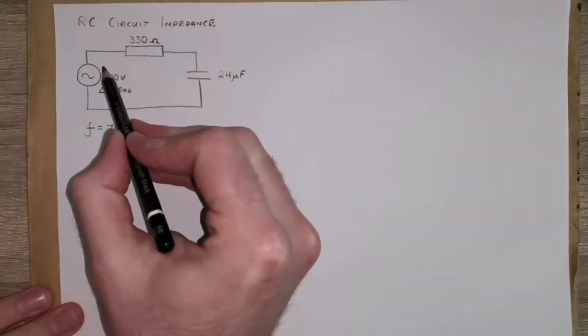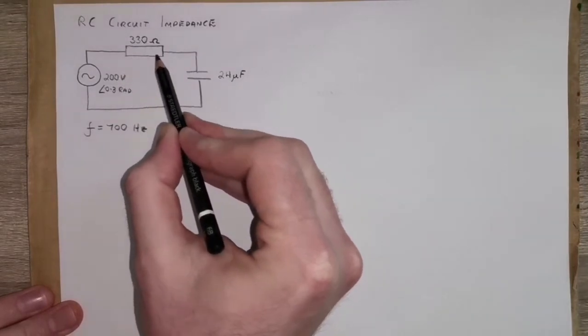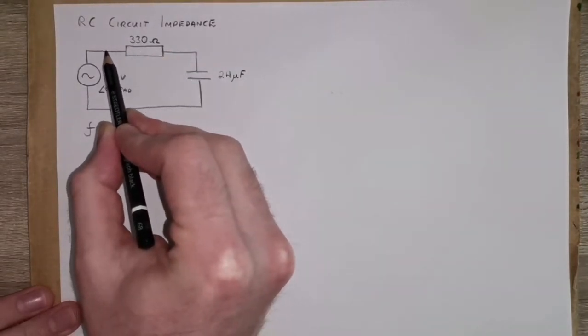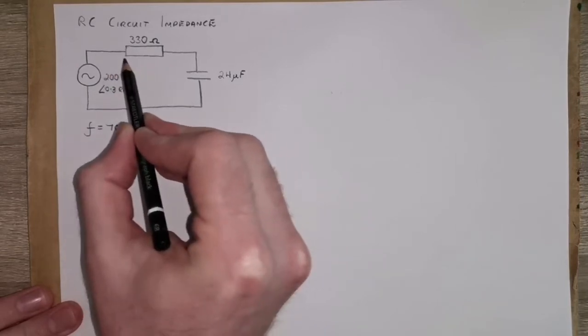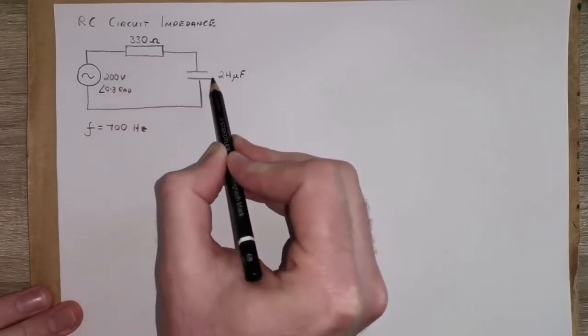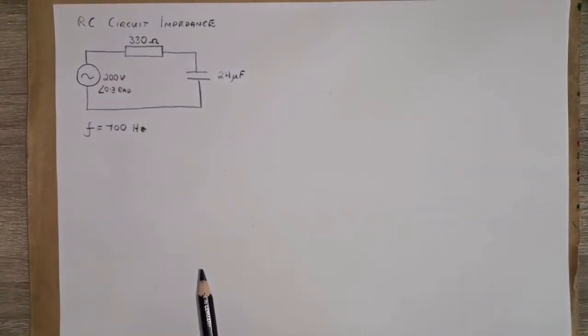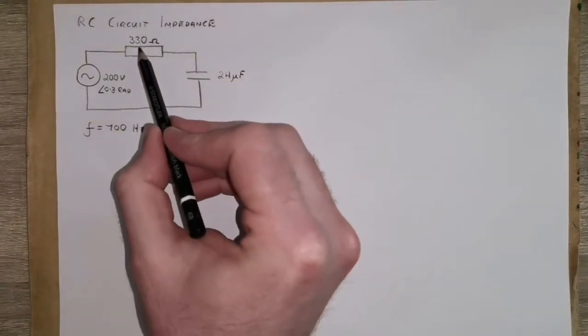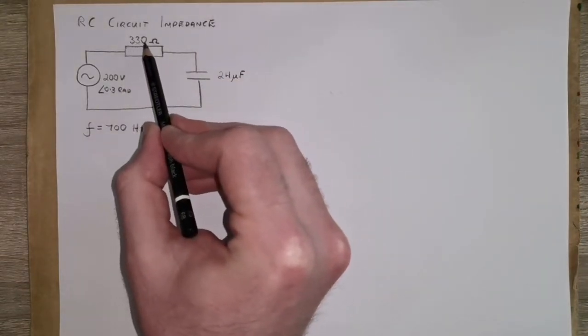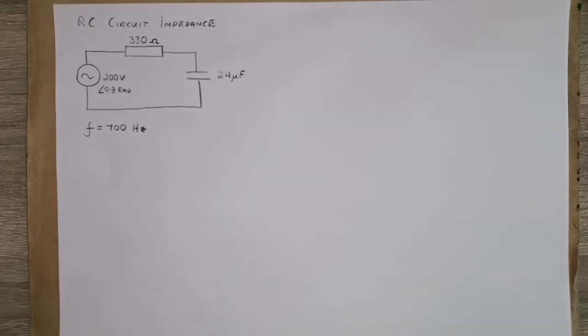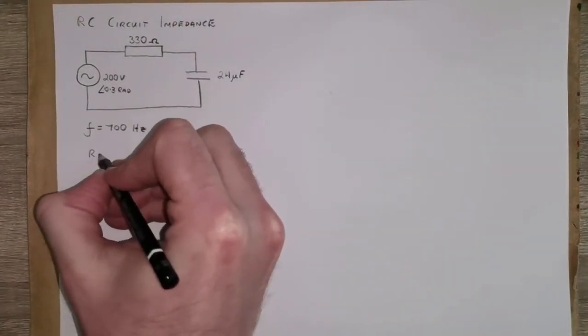So in this question, we're dealing with an AC theory situation, and we essentially have an RC circuit, that's R for resistor, C for capacitor, connected to an alternating current source. And we're providing some information about this circuit, so first of all we're given the resistance of the resistor and the capacitance of the capacitor. Resistance is 330 ohms, and the capacitance is 24 microfarads.